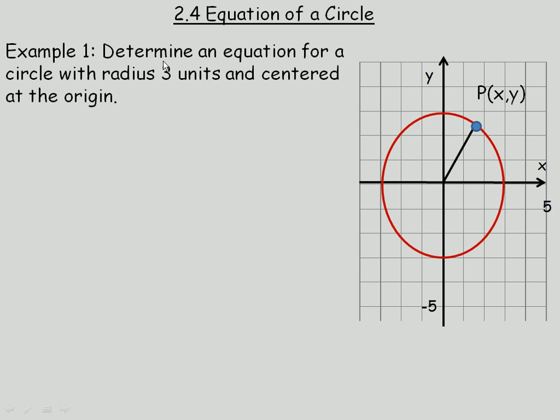This lesson is about the equation of a circle. In the example on the first page, we're going to determine an equation for a circle that has a center at the origin and has a radius of 3 units, so this distance is 3 units here. We're going to find that equation by using the distance formula.